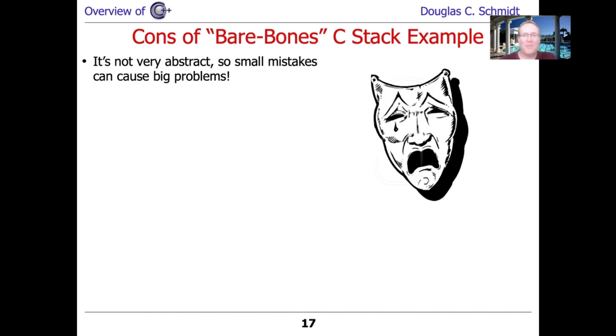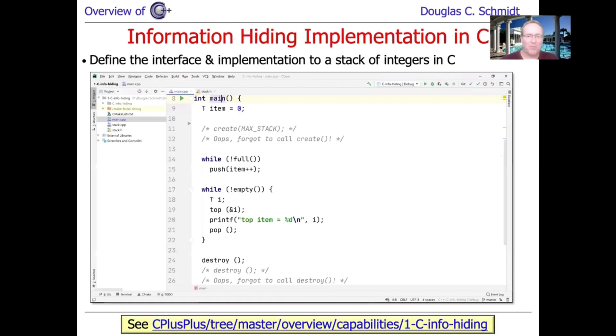We only have one stack. We have to hard code the type. We're using macros. And unless you're really good at documenting your code, people will have no earthly idea what's going on. So that's the first example.